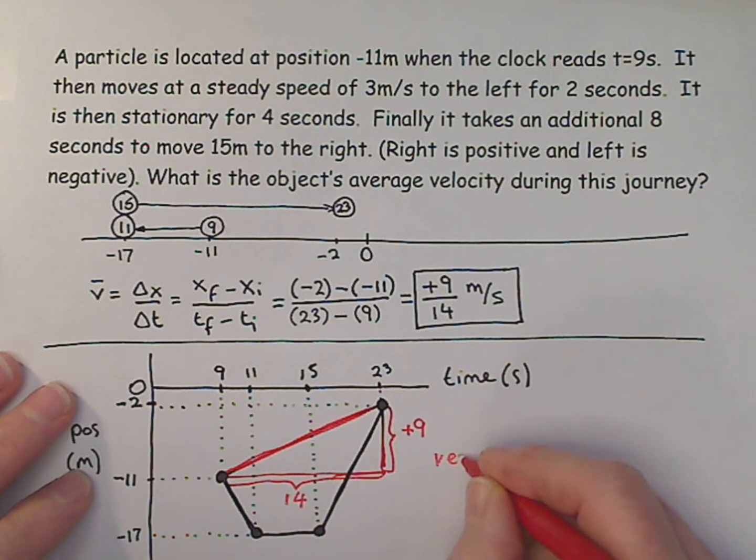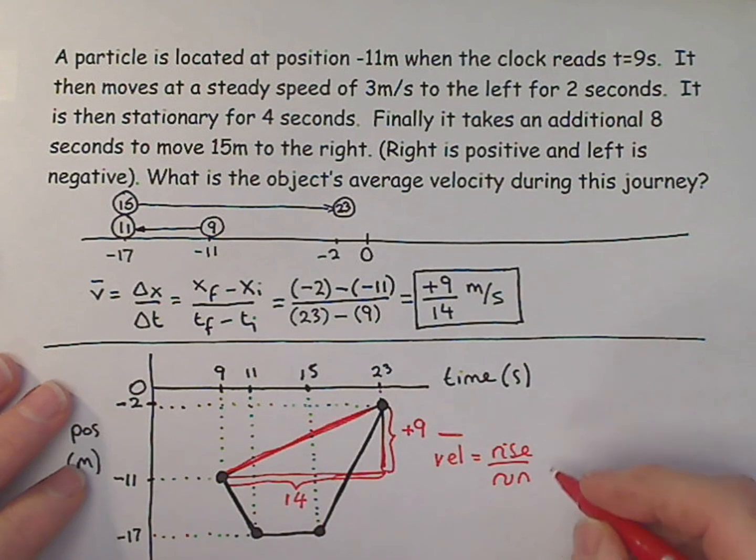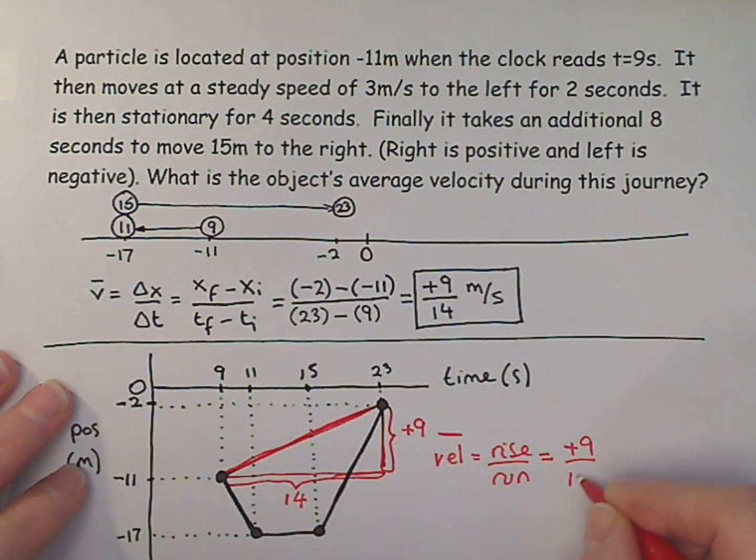So velocity is equal to... Average velocity is equal to rise over run. So this is a position versus time graph, which equals plus 9 over 14 meters per second. And there we have it.